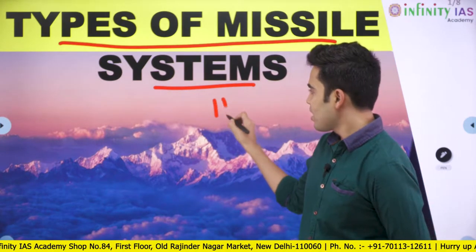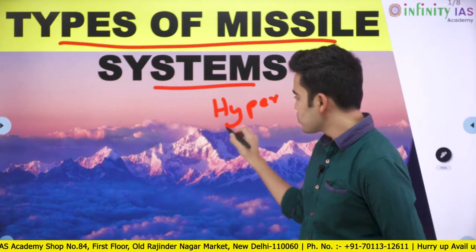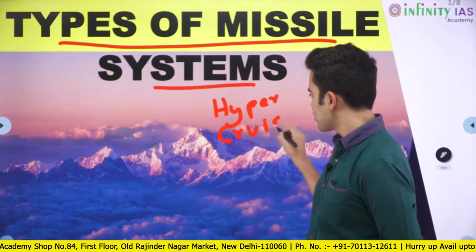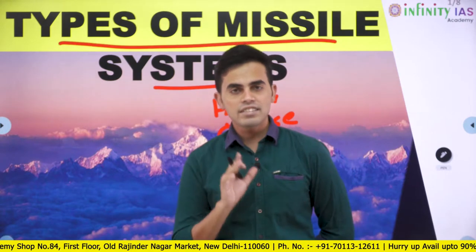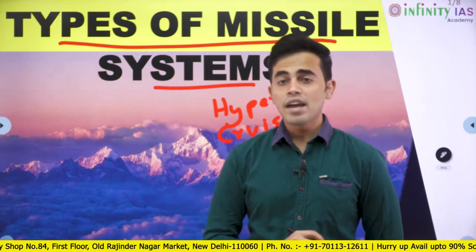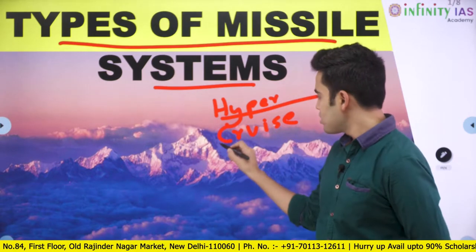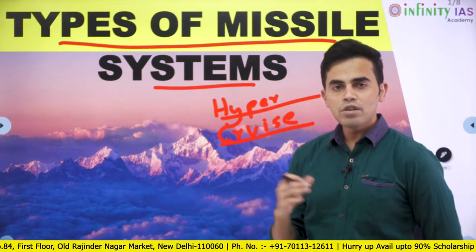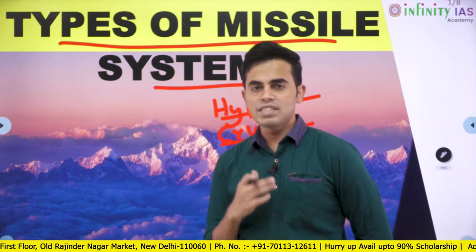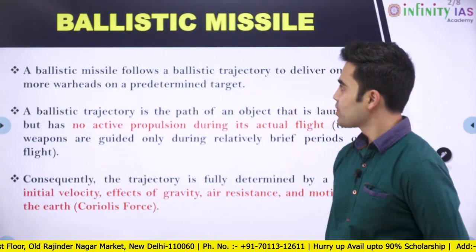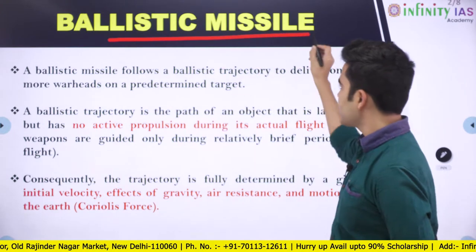Here we see there is hypersonic and cruise missile. This is the kind of missile that was accidentally fired by India. But to understand what is this hypersonic and what is this cruise missile, we need to look at the concepts behind different types of missile systems. We will start with ballistic missiles.